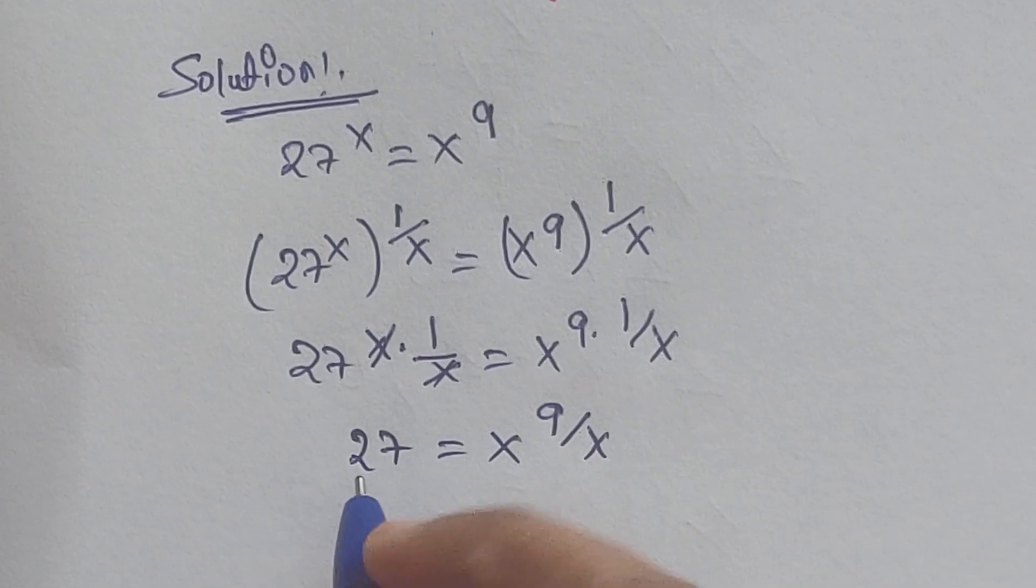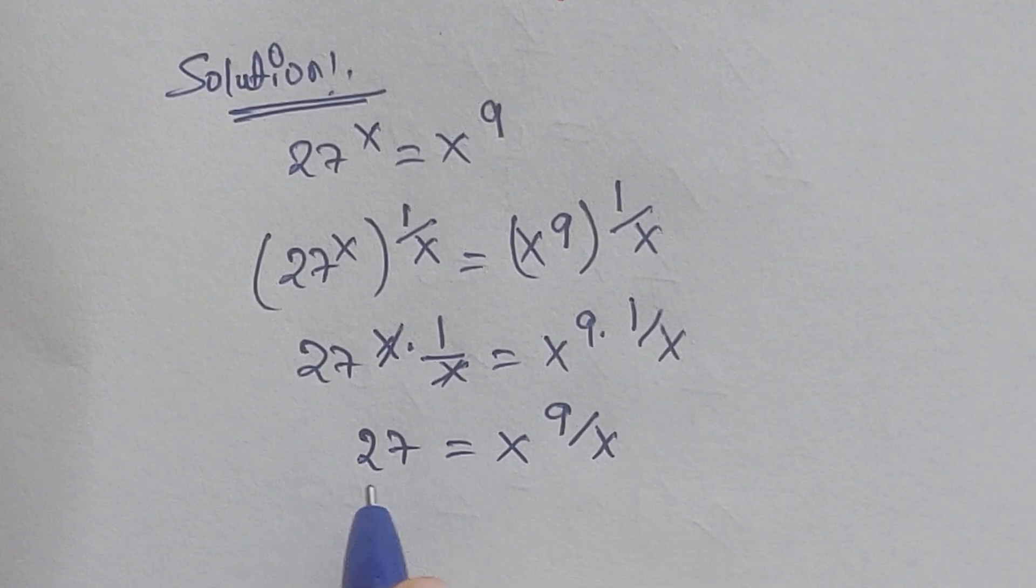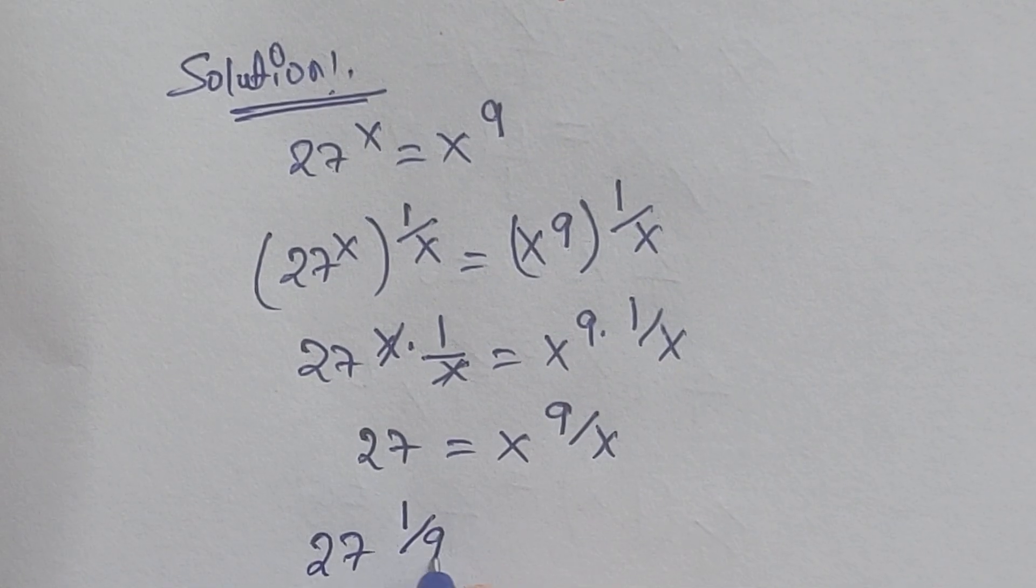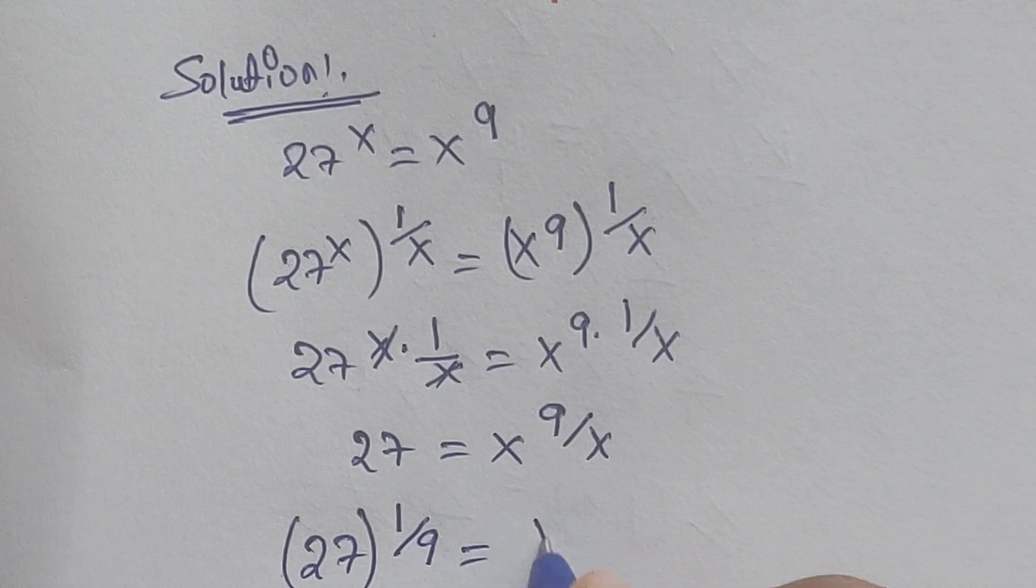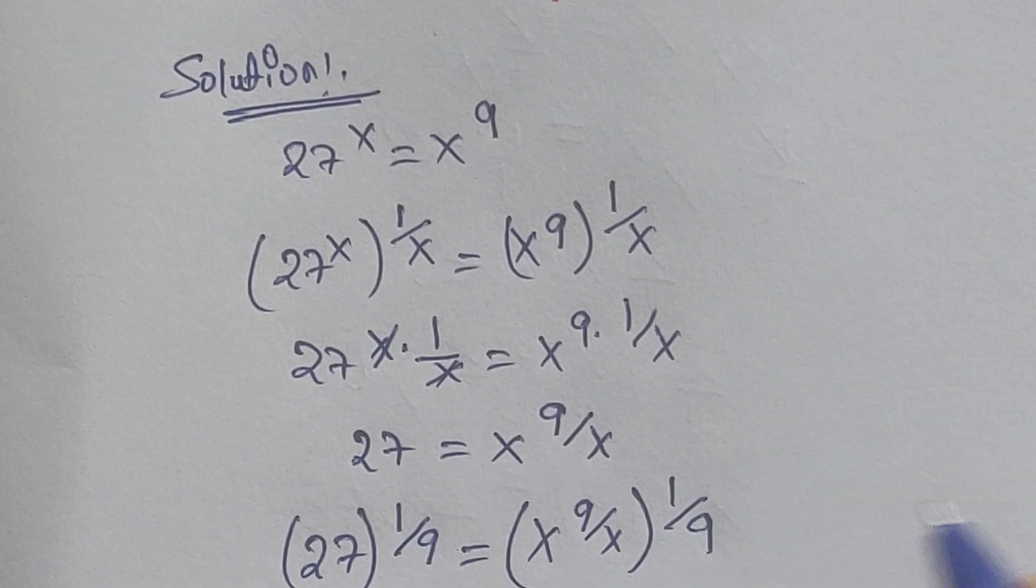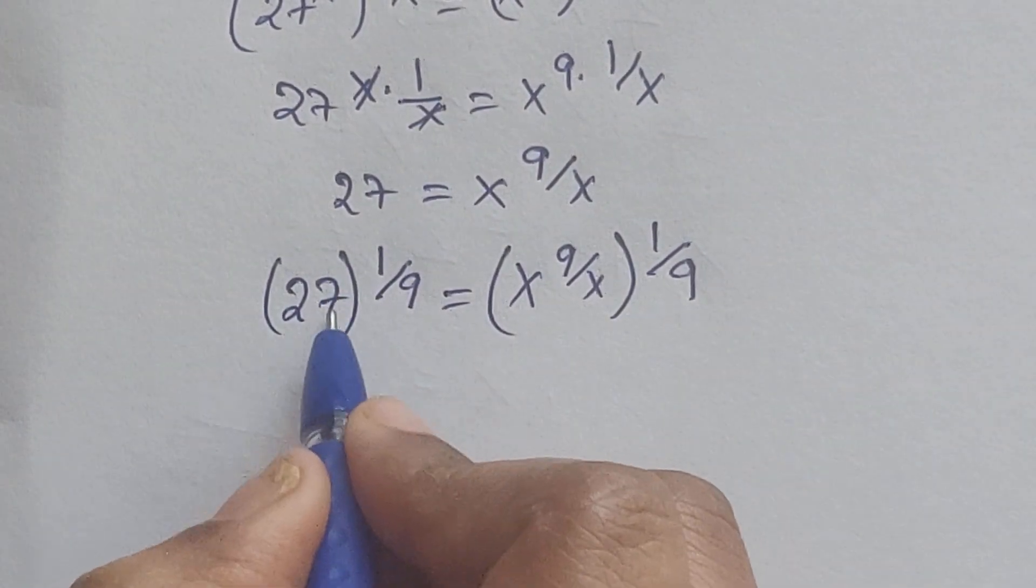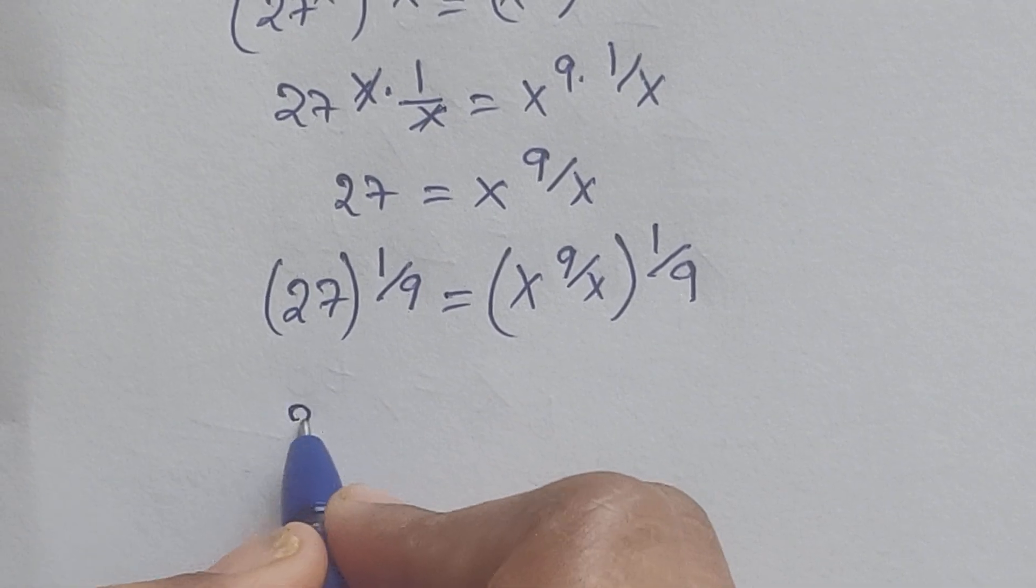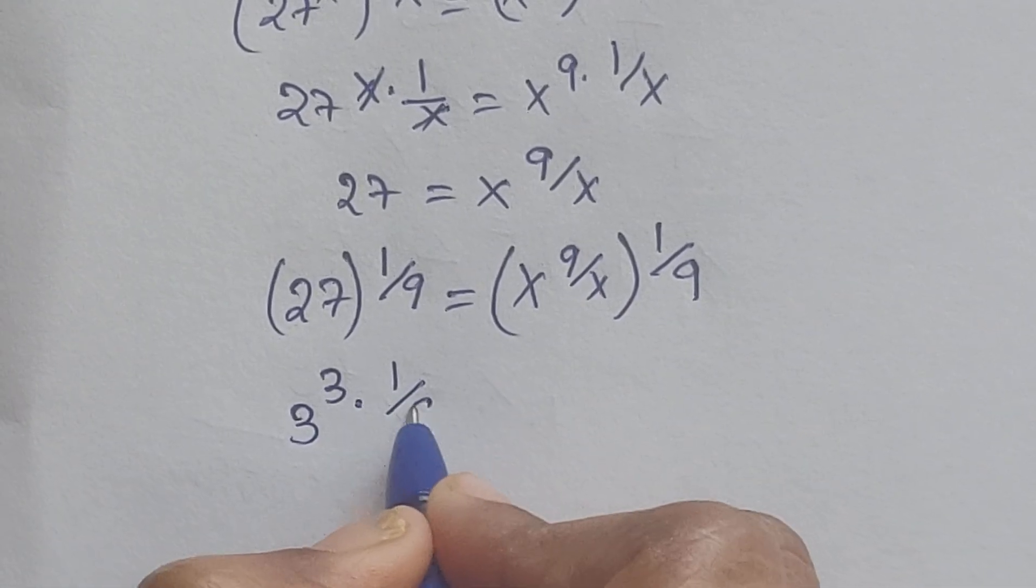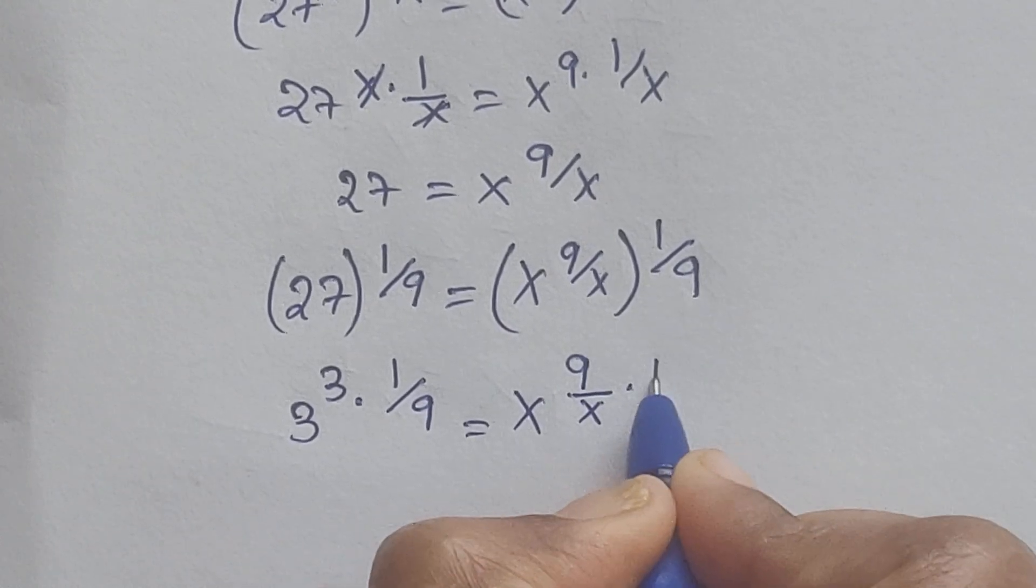So again multiply by 1 by 9 on both sides as the power. 27 to the power of 1 by 9 equals x to the power of 1 by 9. So now 27 we can write it as 3 cube. So 3 cube is 27 times 1 by 9 equals x to the power of 9 by x times 1 by 9.